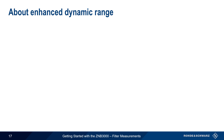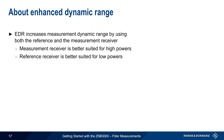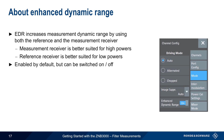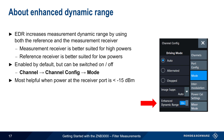Another useful filter measurement feature is Enhanced Dynamic Range, or EDR. EDR improves dynamic range by using both the reference and the measurement receiver of the port measuring the filter output, since the measurement receiver is better suited for measuring higher powers, and the reference receiver is better suited for measuring lower powers. EDR is enabled by default, but can be turned on and off under Channel > Channel Config mode. This feature is particularly beneficial when power at the receiver port is -15 dBm or less, and in these cases EDR can improve dynamic range by about 10 to 20 dB.